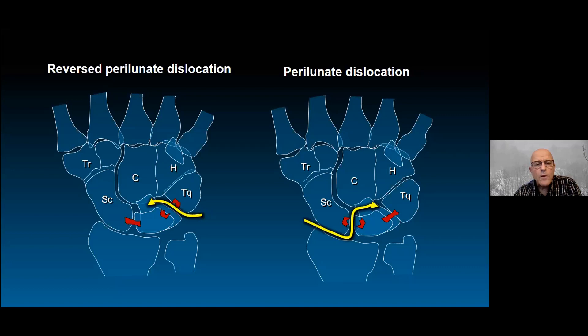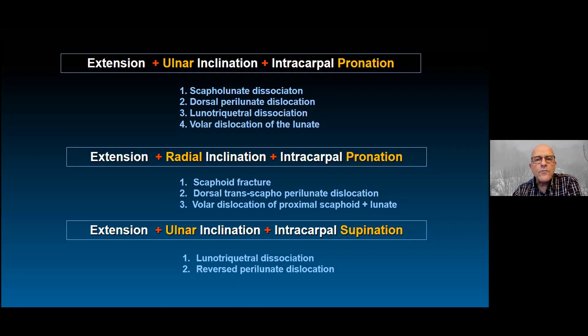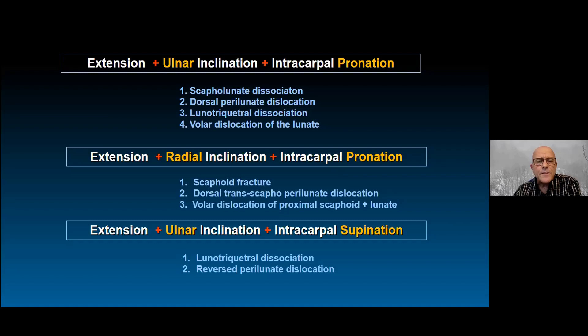To summarize the three mechanisms: extension, ulnar inclination, and intracarpal pronation produces scapholunate dissociation that progresses to dorsal perilunate dislocation, then lunotriquetral dissociation, then palmar lunate dislocation. Extension with radial inclination and intracarpal pronation produces a scaphoid fracture leading to trans-scaphoid perilunate dislocation and palmar dislocation of the proximal scaphoid and lunate. Extension with ulnar inclination and intracarpal supination produces lunotriquetral dissociation followed by reverse perilunate dislocation.